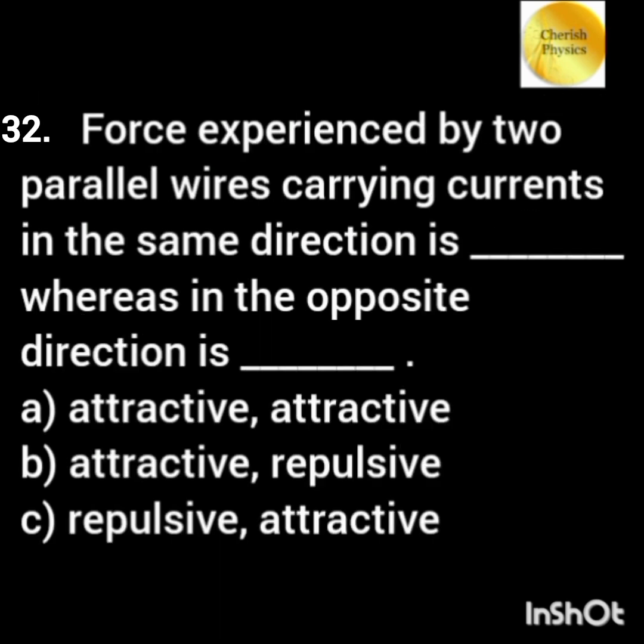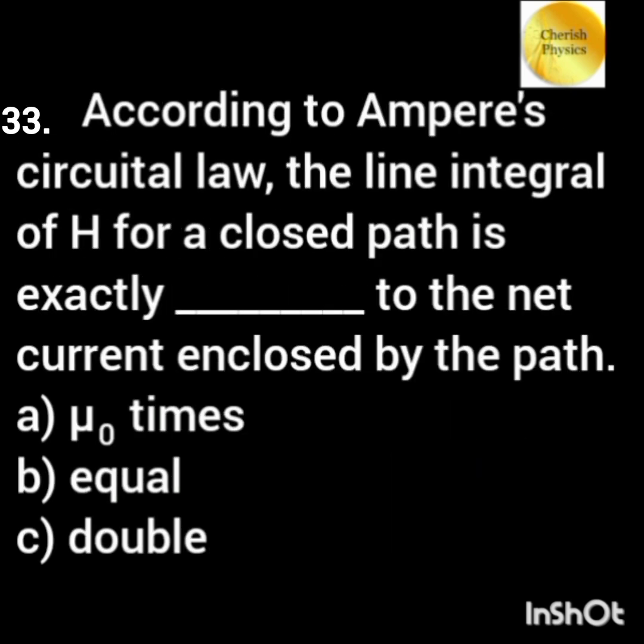The force experienced by two parallel wires carrying current in the same direction is dash, whereas in the opposite direction is dash. According to Ampere's circular law, the line integral of H for a closed path is exactly dash to the net current enclosed by the path.